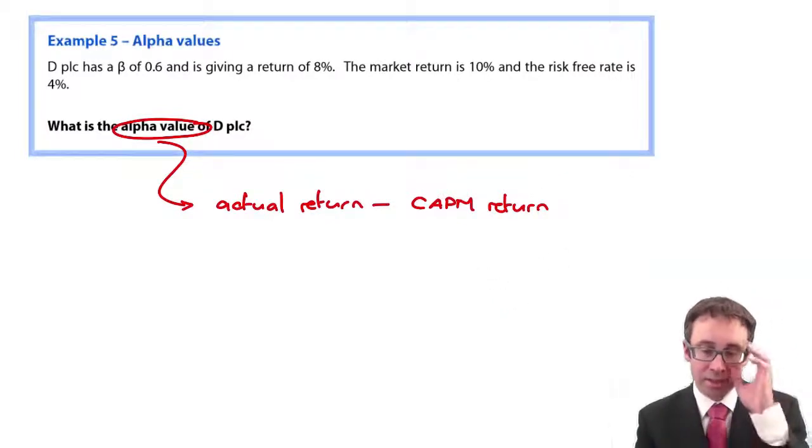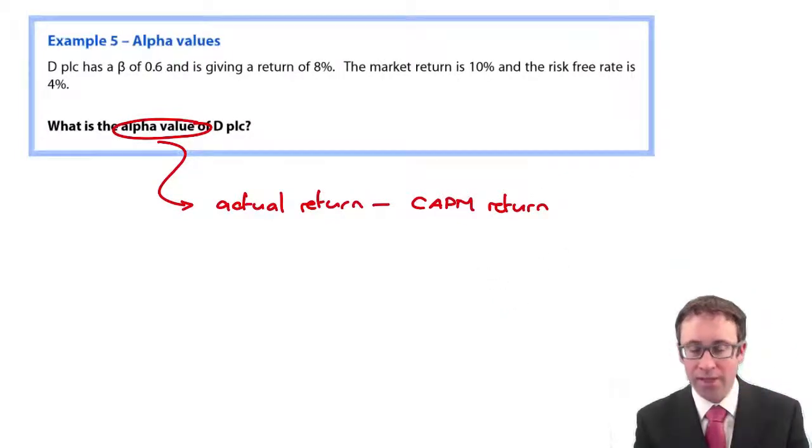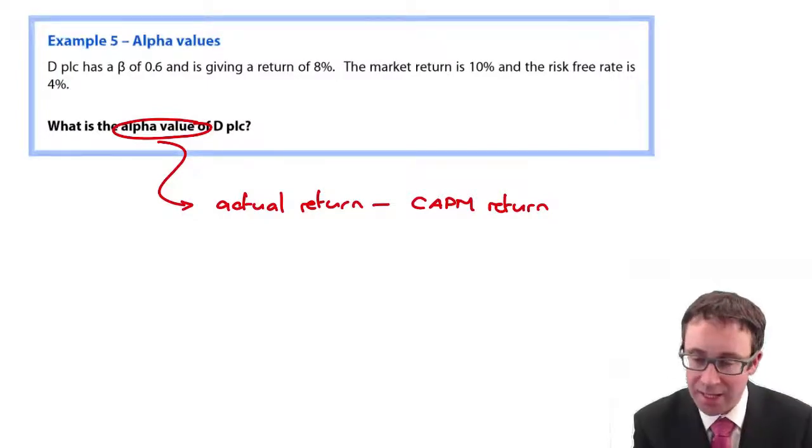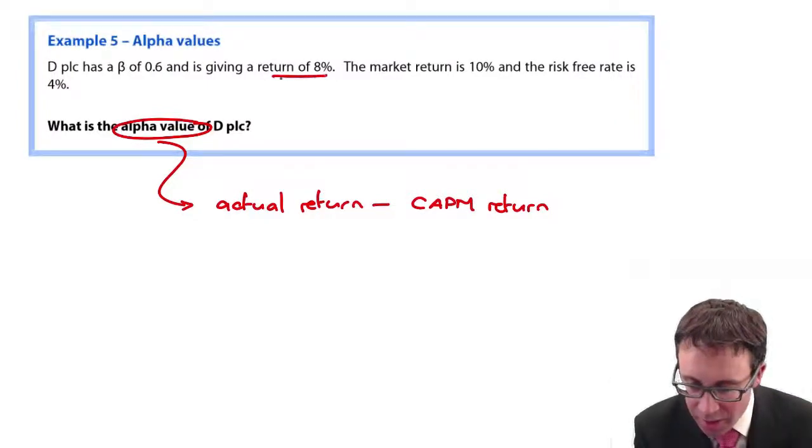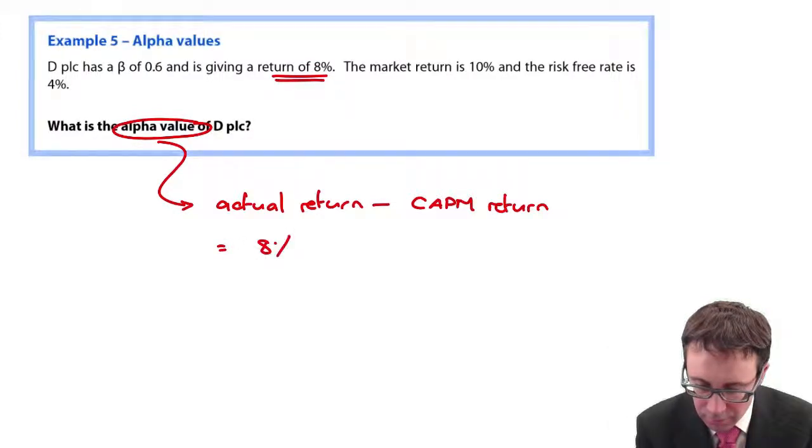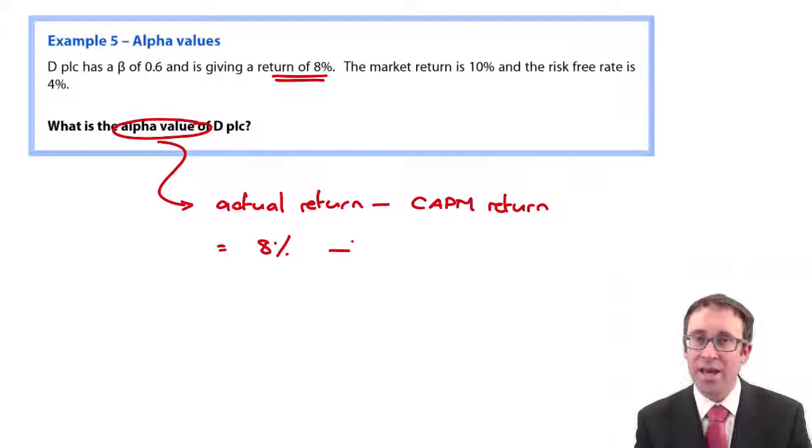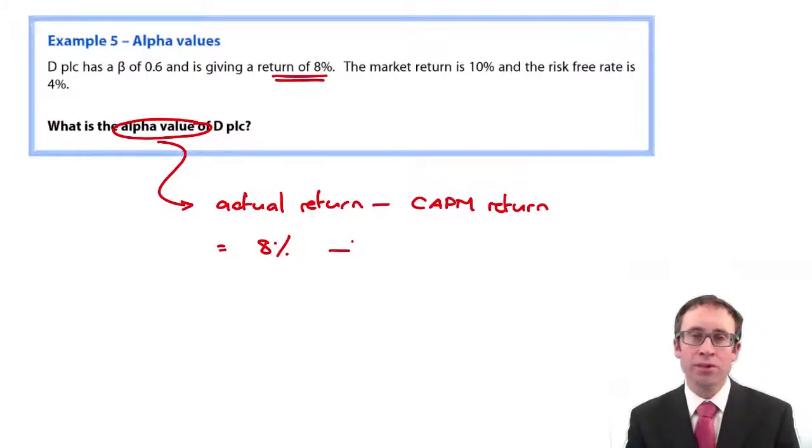Now from the question, it says D has a beta of 0.6, which gives a return of 8 percent. So that return of 8 percent is what we're actually getting.